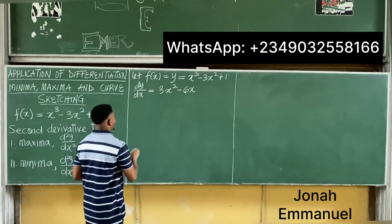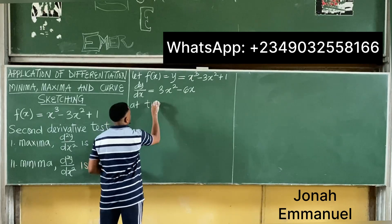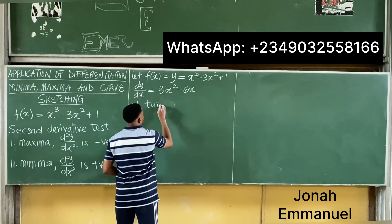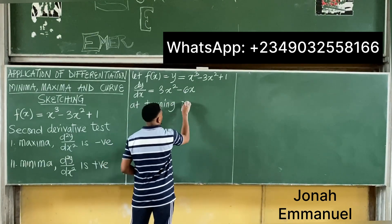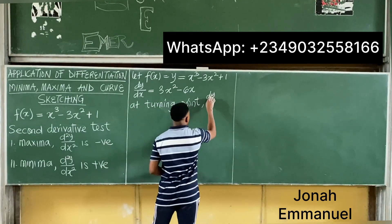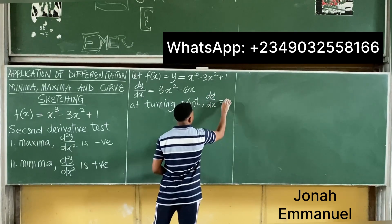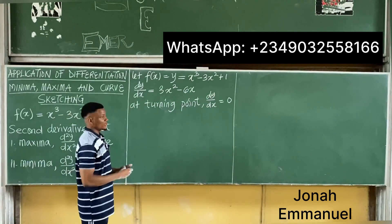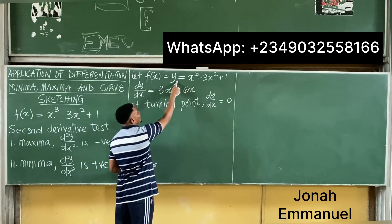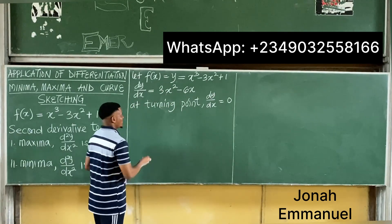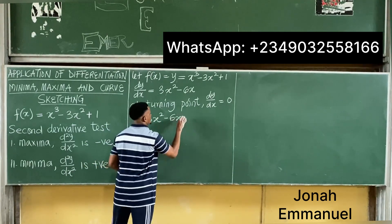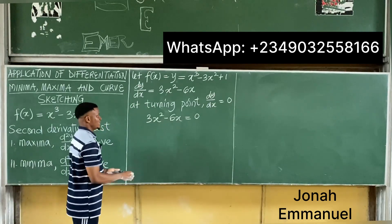We said at turning point the condition is that dy/dx is equal to 0. We explained this in a previous example. The idea is simple: let f(x) equal y, find dy/dx, and equate it to 0. So that means 3x squared minus 6x should be equal to 0.